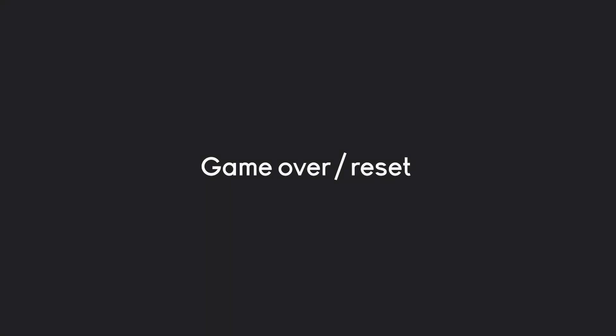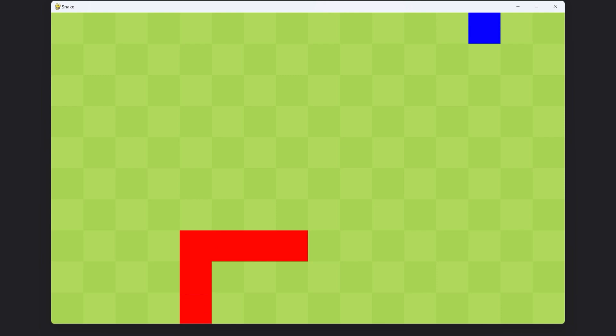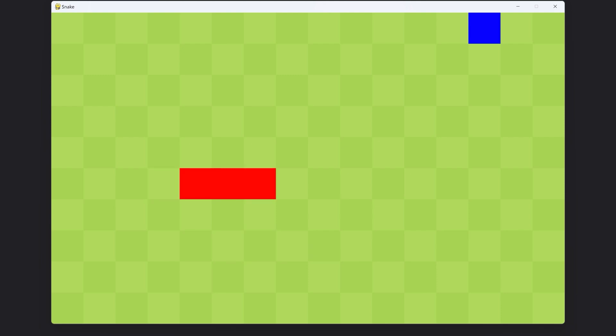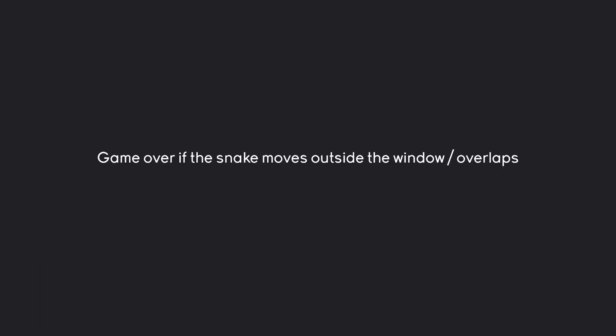Next up, we are going to work on a game over reset mechanic. Ultimately, what that means is there should be a game over state if the snake is moving outside of the window or overlaps with itself. If either of those conditions are met, then we want to restart in the origin position. Also, we only want to start moving the snake if there is user input.